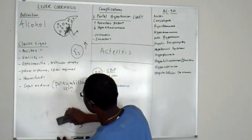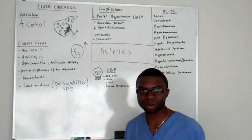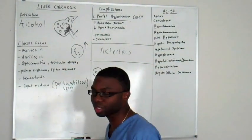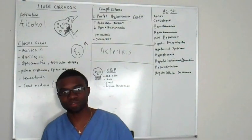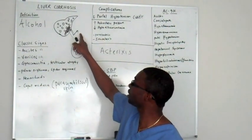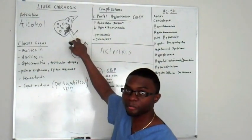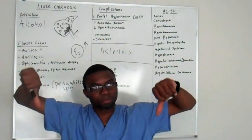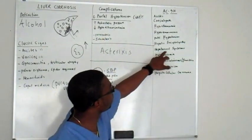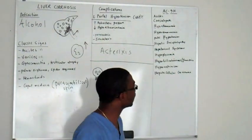Another complication is hepatorenal syndrome where the kidney doesn't get enough blood flow. If you lose intravascular fluid, your blood pressure goes down. If blood pressure goes down, the kidney doesn't get anything, so your BUN and creatinine will be elevated.